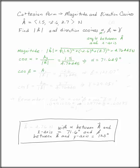Same thing with beta. Cosine of beta is A_y over the absolute value of A, which is minus 2.6 over 4.76445. And cosine of gamma is the z component over the magnitude of A, which is 3.7.